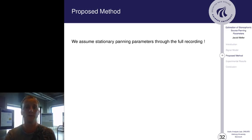We assume in the full recording that the stationary panning parameters, which means that if we have, for example, in a music mixture, a drum set which is in mono, and we have panned that to stereo to some position, we assume that position to be fixed through the full recording.